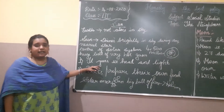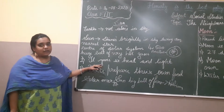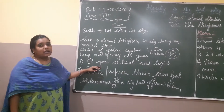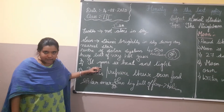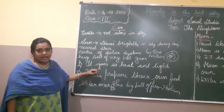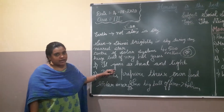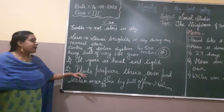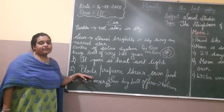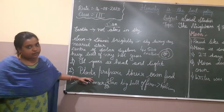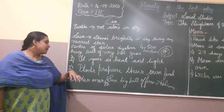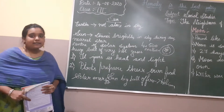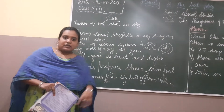If there is no heat and light, plants and we cannot survive. Plants cannot grow food, and if plants cannot grow food, we will be starving. Plants prepare their own food with the help of the sun through photosynthesis. Solar energy is the energy obtained from the sun — with solar energy we have solar water heaters and solar cookers.